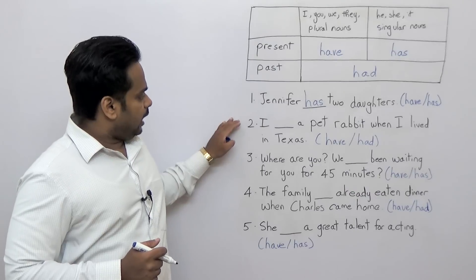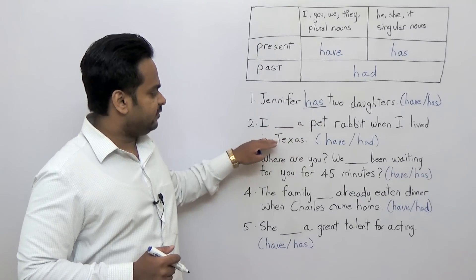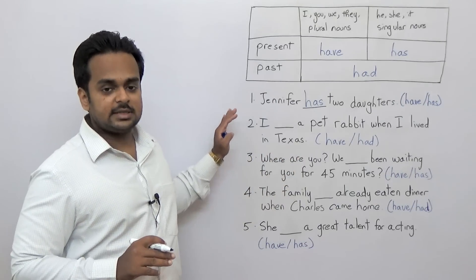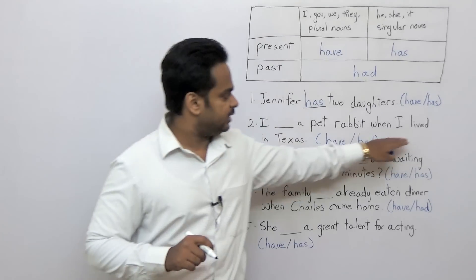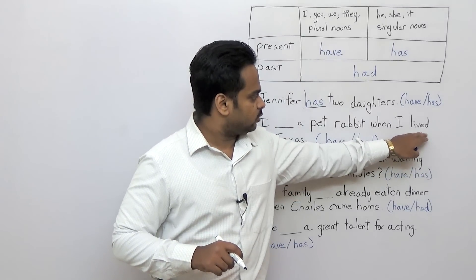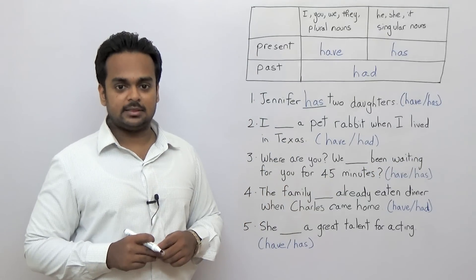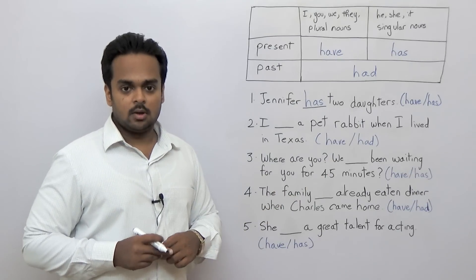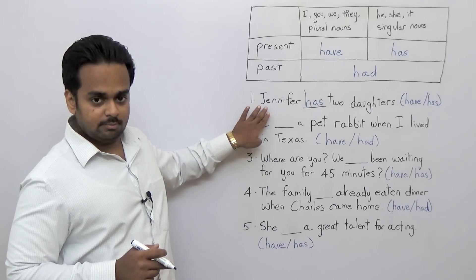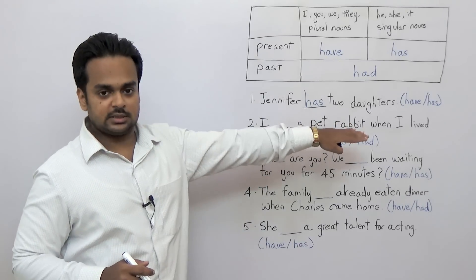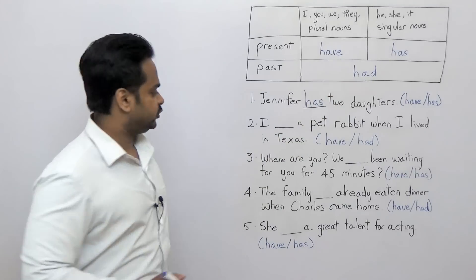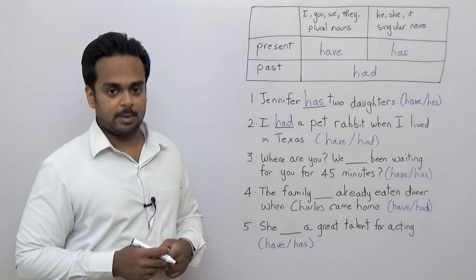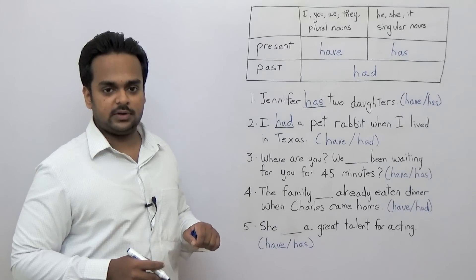Number two: 'I ___ a pet rabbit when I lived in Texas.' The first thing you should notice is that this sentence is in the past tense — we know that because we're talking about when I lived in Texas. So would you use 'have' or 'had'? You don't even need to look at the subject, because as soon as you have a sentence in the past tense you can only use 'had': 'I had a pet rabbit when I lived in Texas.'